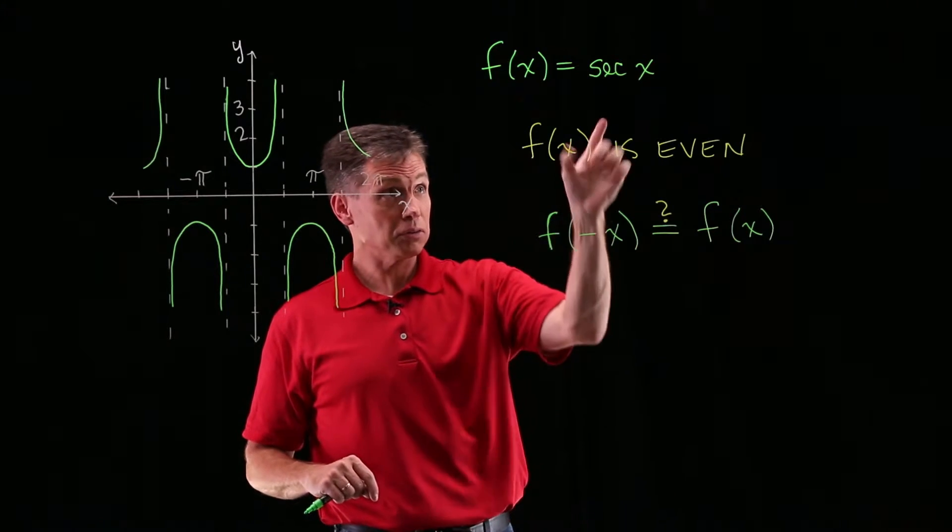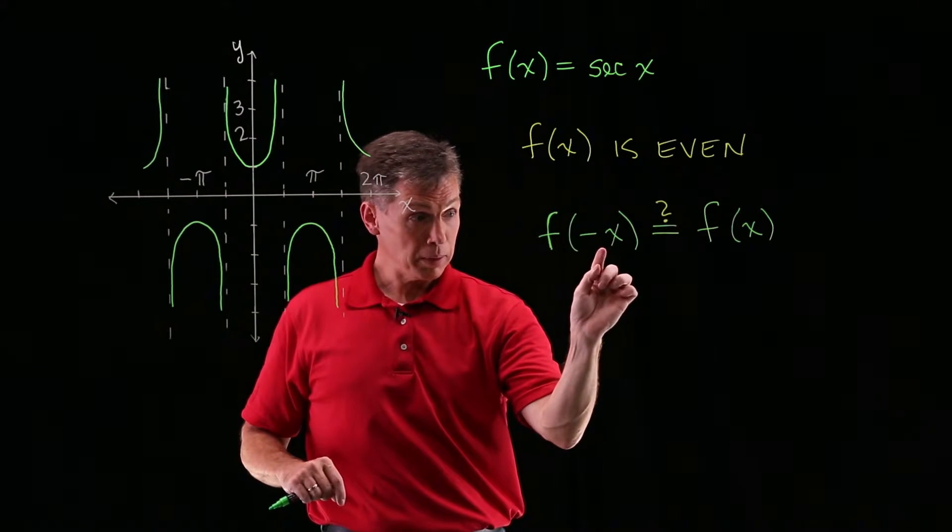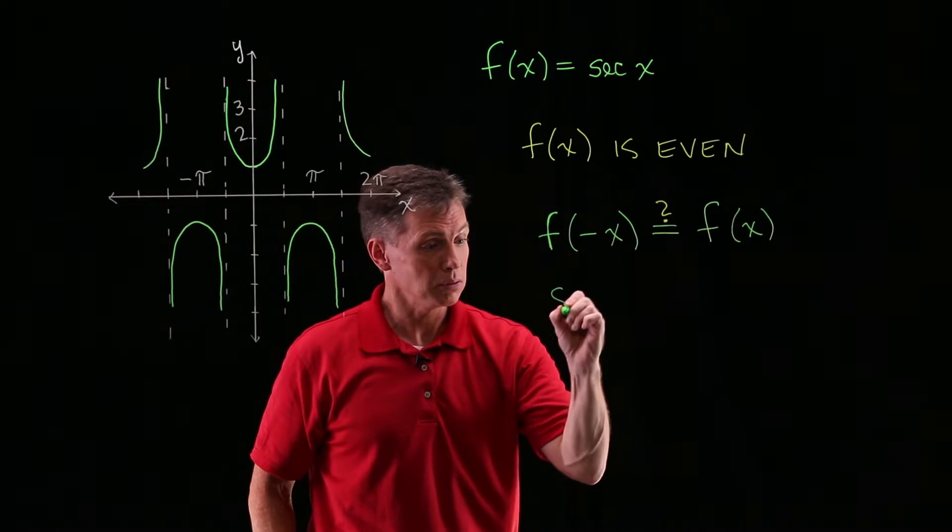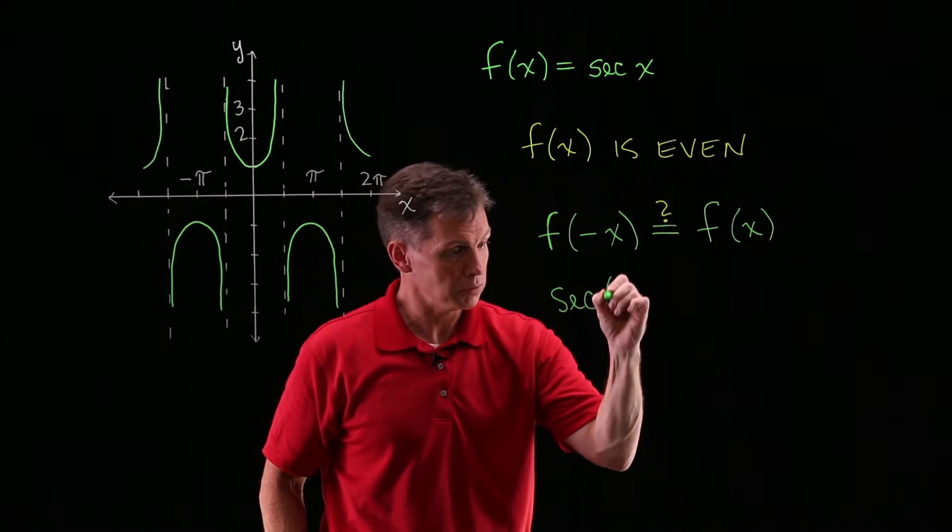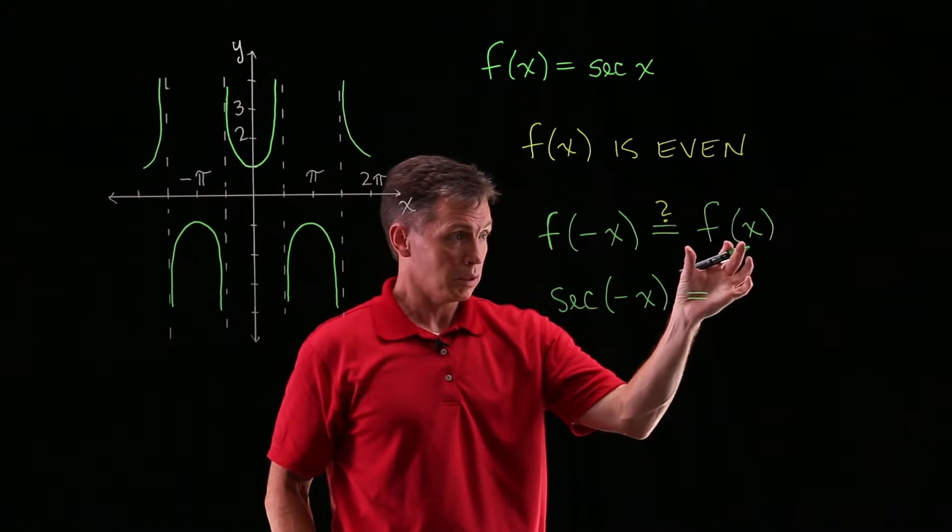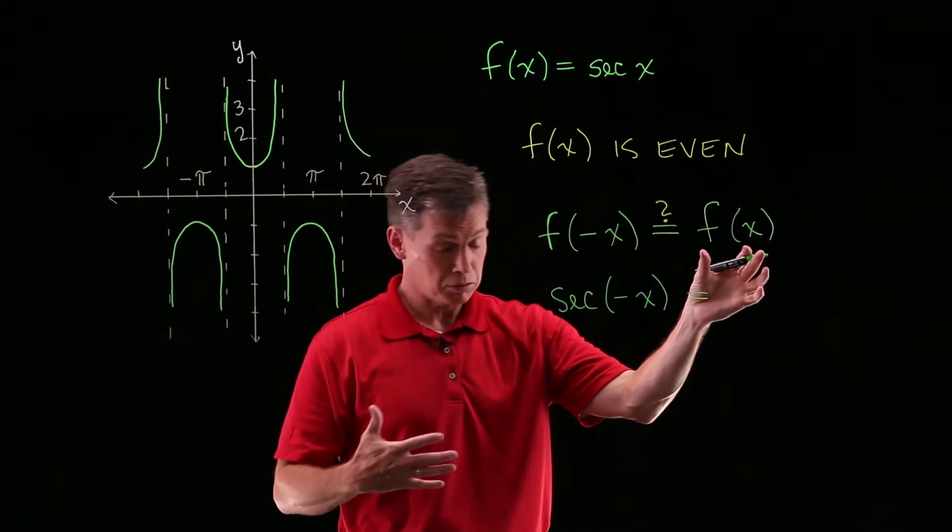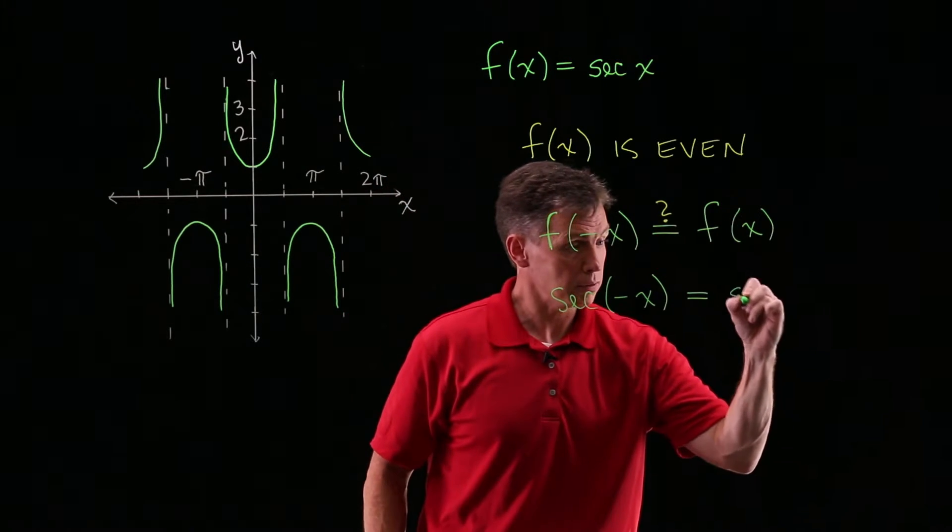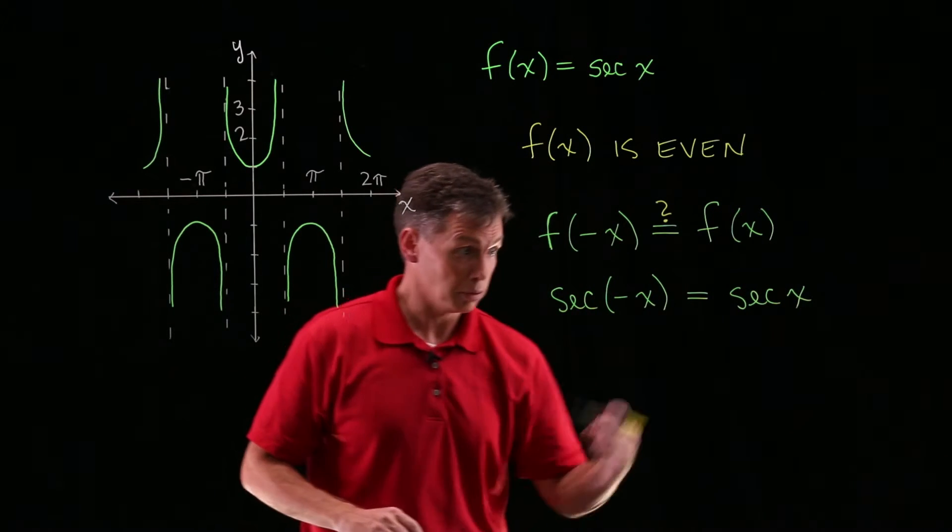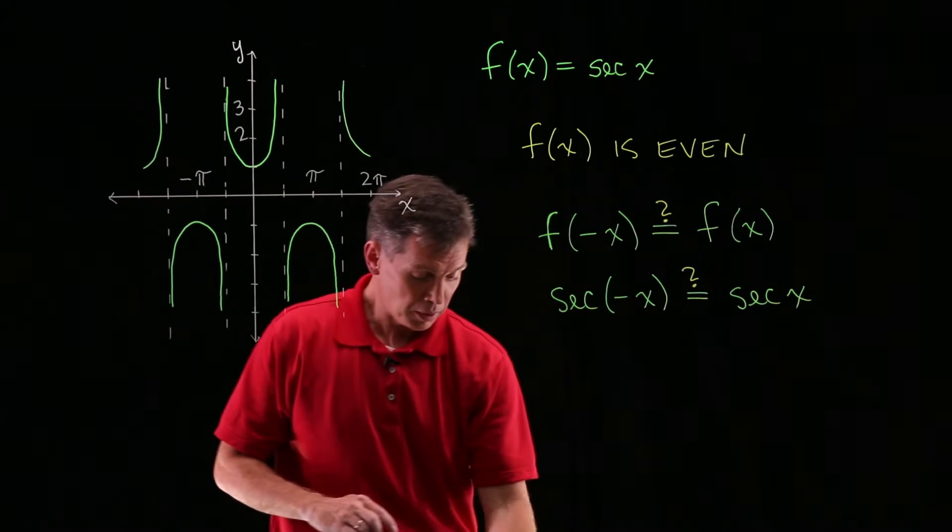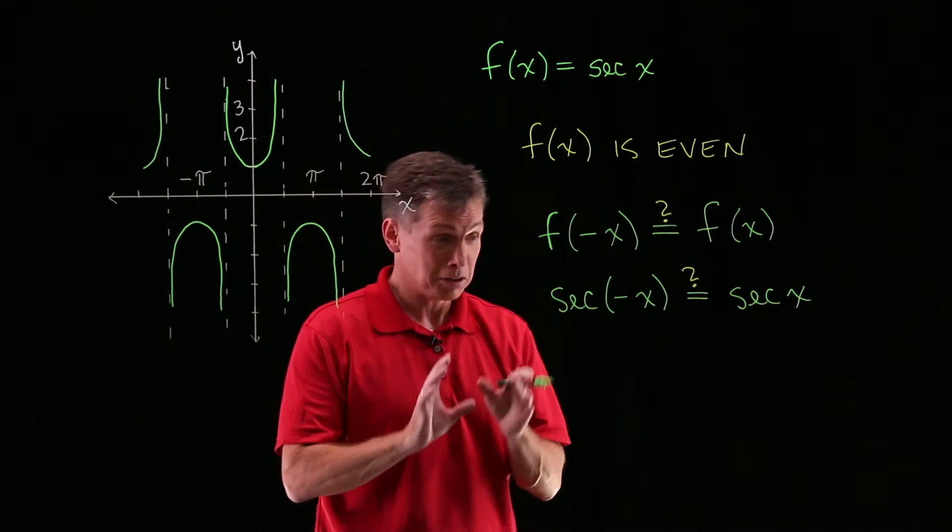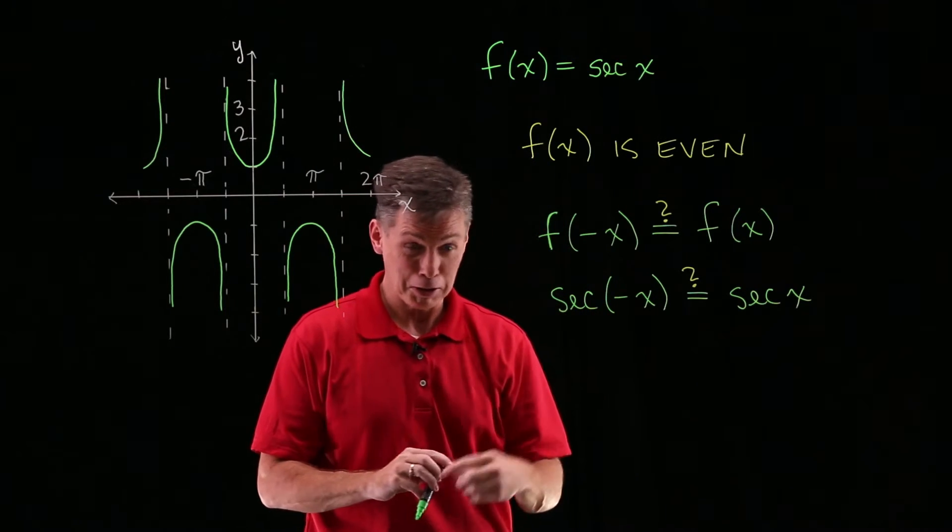Our f of x, right there, I'm going to go ahead and put a minus x in there as the argument. So for our f of x, we're actually asking, is the secant of minus x equal to? On the right side of the equal sign, just regular old f of x. So my f of x is secant of x. And I'll still pose that as a question.